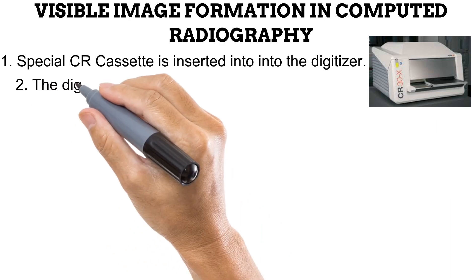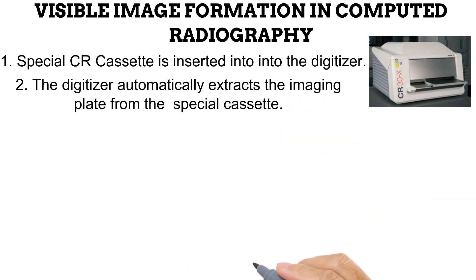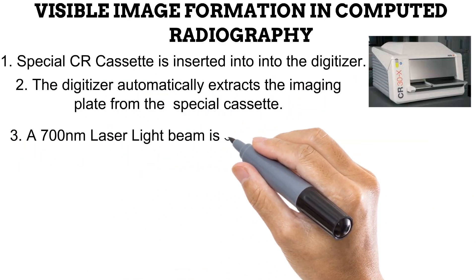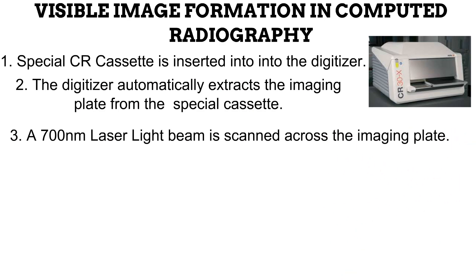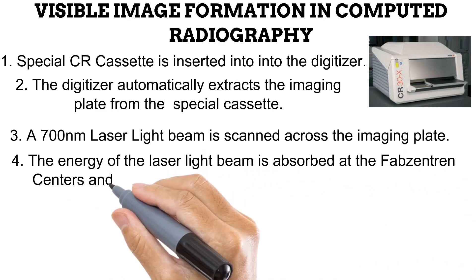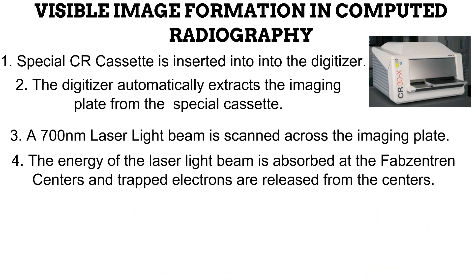In the digitizer, the imaging plate within the cassette is extracted. Then a laser light beam of wavelength 700 nanometers is scanned across the extracted imaging plate. This light beam possesses light energy, which is absorbed by the phabzentrant centers as the beam is scanned across the imaging plate. During latent image formation, the phabzentrant centers trapped electrons, and these trapped electrons are released as the phabzentrant centers absorb the light energy.